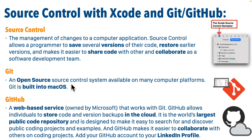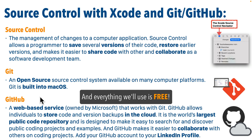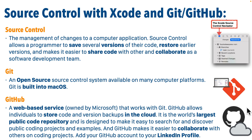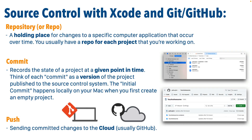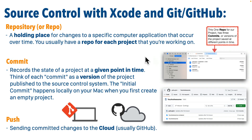We'll be using two products that Xcode connects to for source control: Git and GitHub. Git is open source version control software that you've already got on your Mac, and when we use Git to save versions of our project, those are saved locally to your Mac's hard drive. GitHub is a web-based service, owned by Microsoft, that allows us to take versions we're saving locally and push them into the cloud. Our primary holding place for a project is referred to as a repo or repository, and each version of a project you save is called a commit.